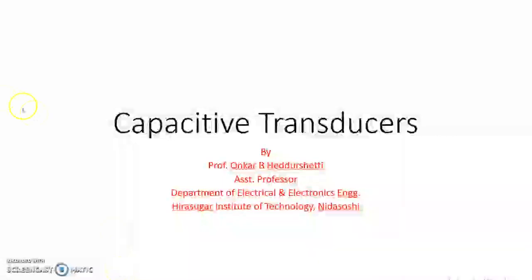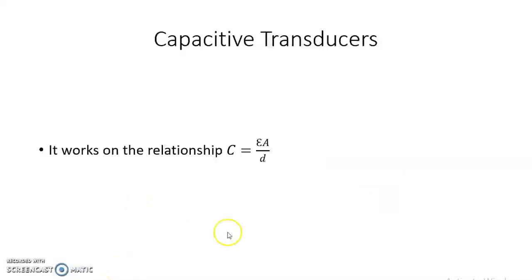Now let us discuss capacitive transducers. The principle of operation of a capacitive transducer is based on the familiar equation of capacitance of a parallel plate capacitor: C is equal to epsilon multiplied by A divided by d.